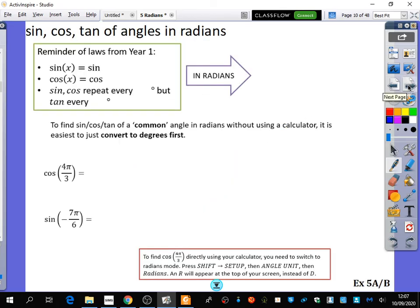There are also some other things we need to make sure that we can do from the year one content. If you're not so familiar with some of these bits from lockdown, it may be worth having a look over some of the chapter nine stuff. So I want to talk about sine, cosine, and tangent of angles that are now in radians.